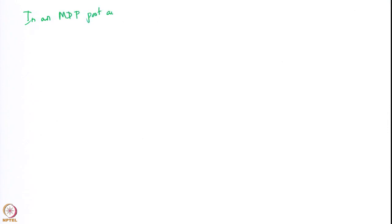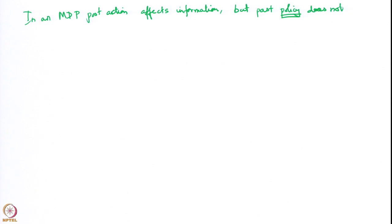In an MDP, past action affects information but past policy does not. This is the key difference that arises because of the non-classical information pattern.